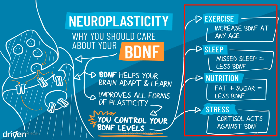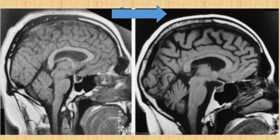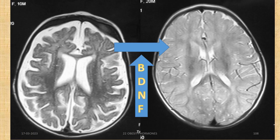Exercise can increase BDNF at any age. Missed or inadequate sleep leads to reduction in BDNF. When fat and sugar are high in blood, BDNF decreases, causing obese persons to lose memory faster and earlier. Chronic stress raises cortisol, which acts against BDNF and leads to senile dementia. Obesity, type 2 diabetes, cardiovascular diseases, and depression all decrease BDNF, ultimately leading to dementia and cognitive impairment. The good news is that at any age, reversing obesity can increase BDNF and reverse senile dementia and brain atrophic changes.